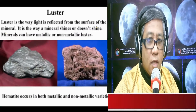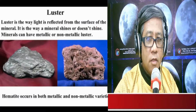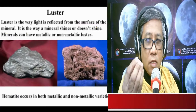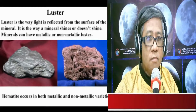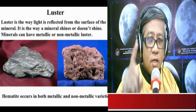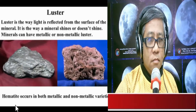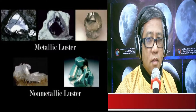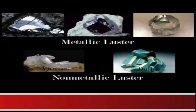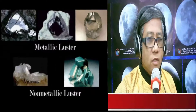Luster is the way light is reflected from the surface of the mineral — the way a mineral shines or doesn't shine. Minerals with metallic luster are shiny, while those with non-metallic luster are not shiny. So minerals based on luster can be categorized as metallic and non-metallic.